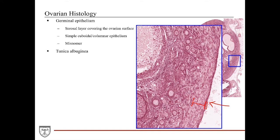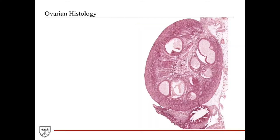The tunica albuginea is an ill-defined layer of dense irregular connective tissue surrounding the outer layer of the ovaries, deep to the germinal epithelium. During fetal and childhood periods, the ovarian cortex contains hundreds of thousands of immature follicles called primordial follicles in the background of ovarian stroma. The primordial follicles would be the majority type of follicles seen before puberty.